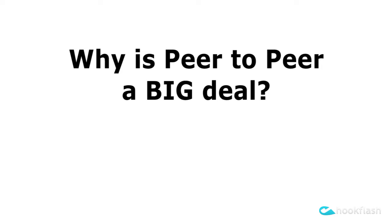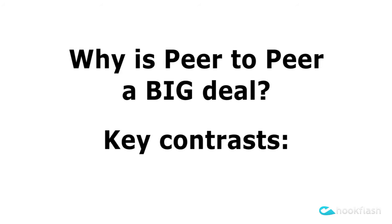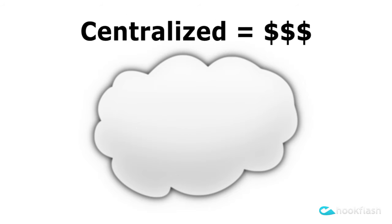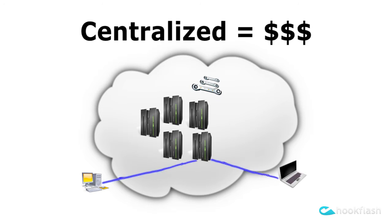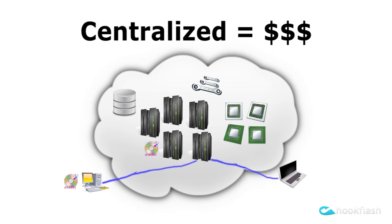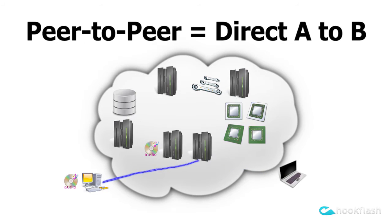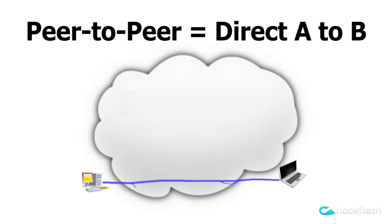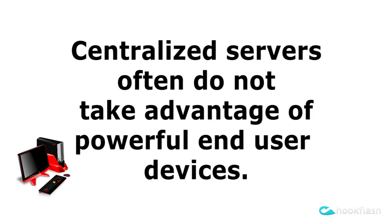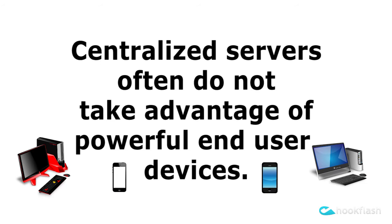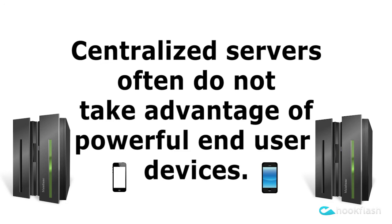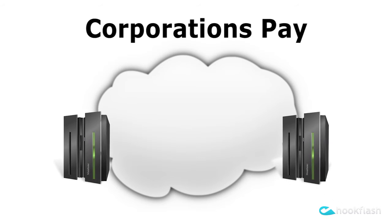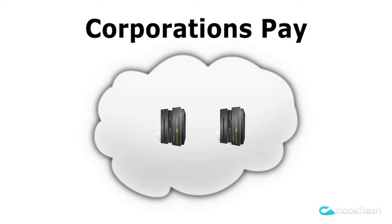So why is it that peer-to-peer communication is such a big deal? Peer-to-peer communication offers key advantages. Corporations pay major expenses to host, administer, relay, replicate, process, and store data in centralized servers spread throughout the internet cloud. Whereas peer-to-peer allows devices to communicate directly without large server infrastructure. Even though end-user devices are often extremely powerful, they frequently do little work relative to their server counterparts.